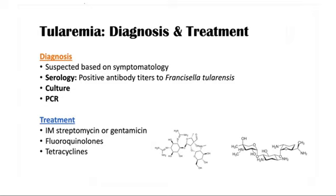Treatment involves using streptomycin, gentamicin, fluoroquinolones, and tetracyclines. These are the antibiotics used to treat tularemia disease.